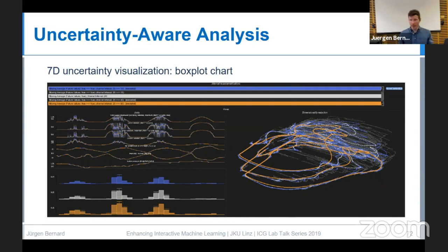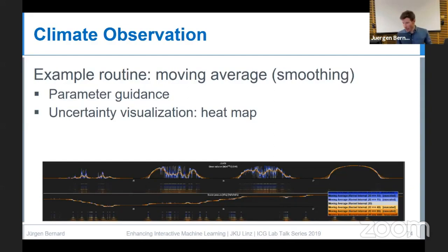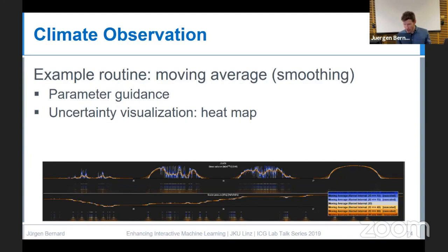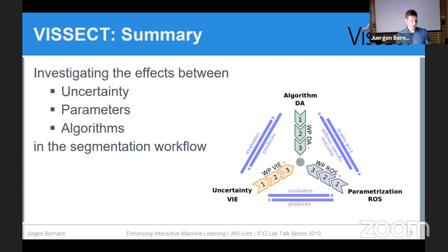To summarize the first research branch: we are currently investigating the effects between uncertainty, parameters, and algorithms in the segmentation workflow across the three project partners. The climate observation example shows parameter guidance with moving average and the heat map approach for uncertainty visualization. Please refer to the listed references for more details.